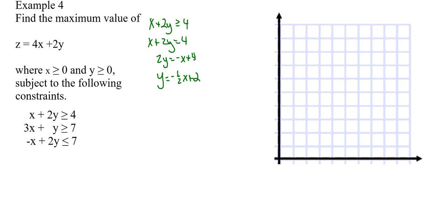So we have a y-intercept at 2, and our slope is negative one-half, so down 1 over 2, down 1 over 2, and this is a solid line.